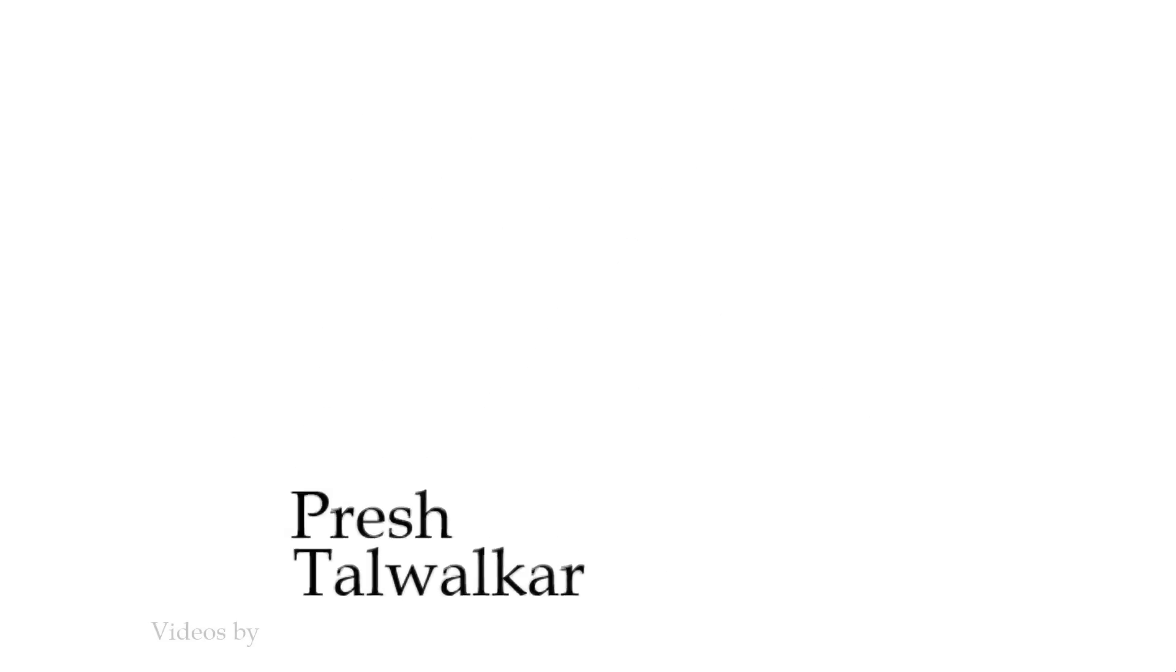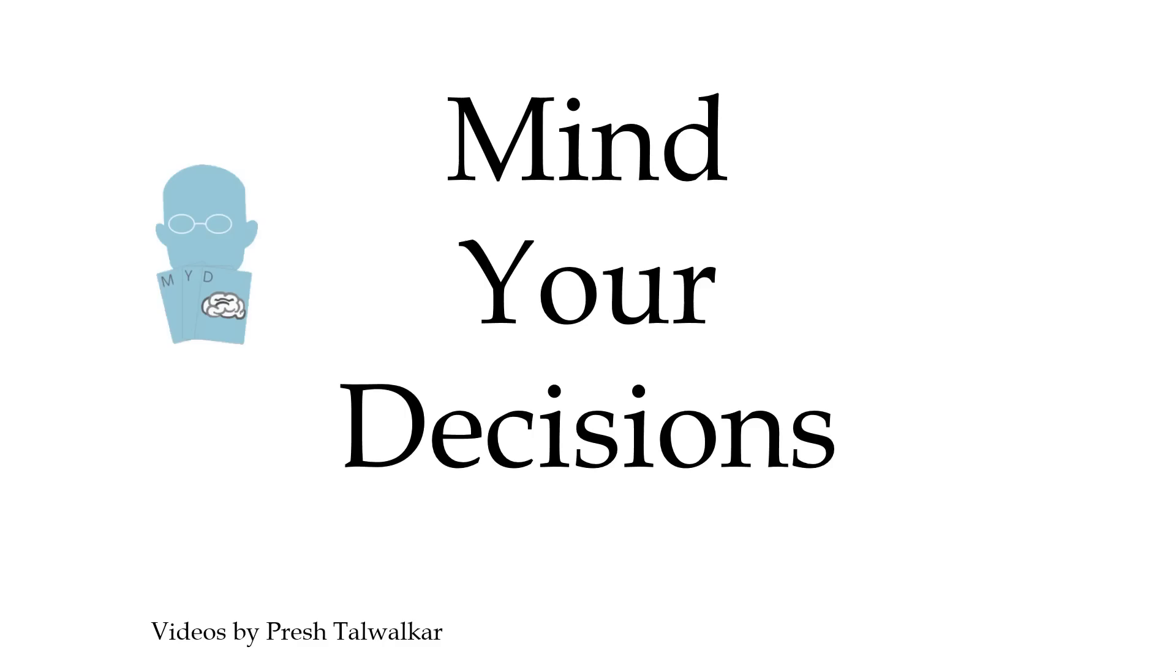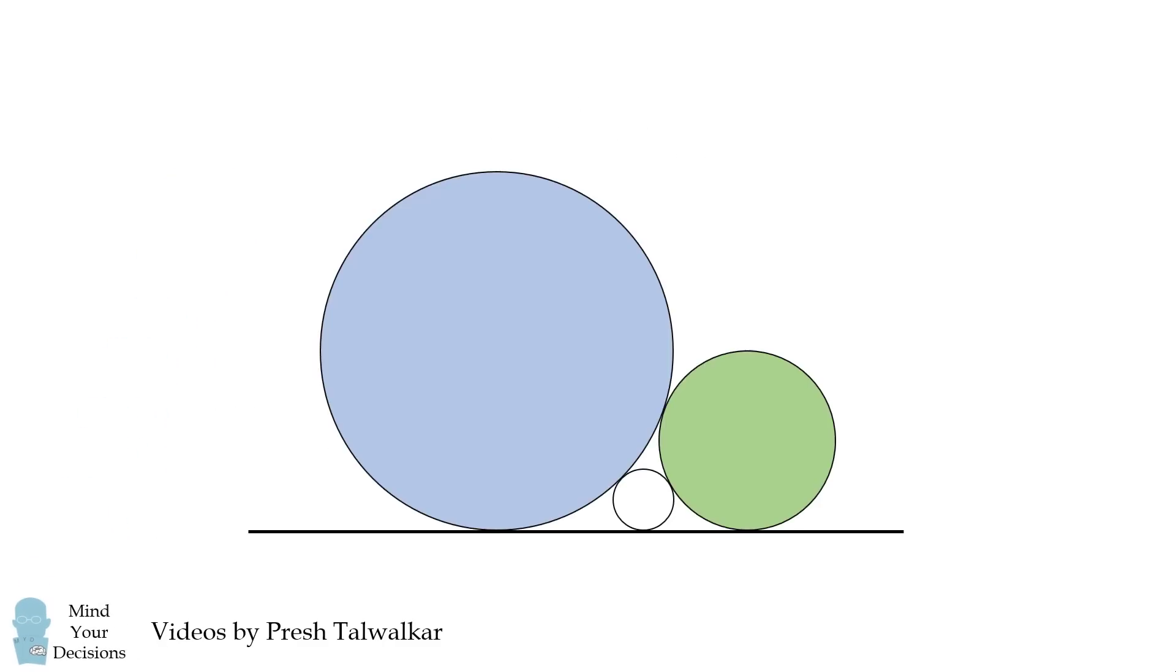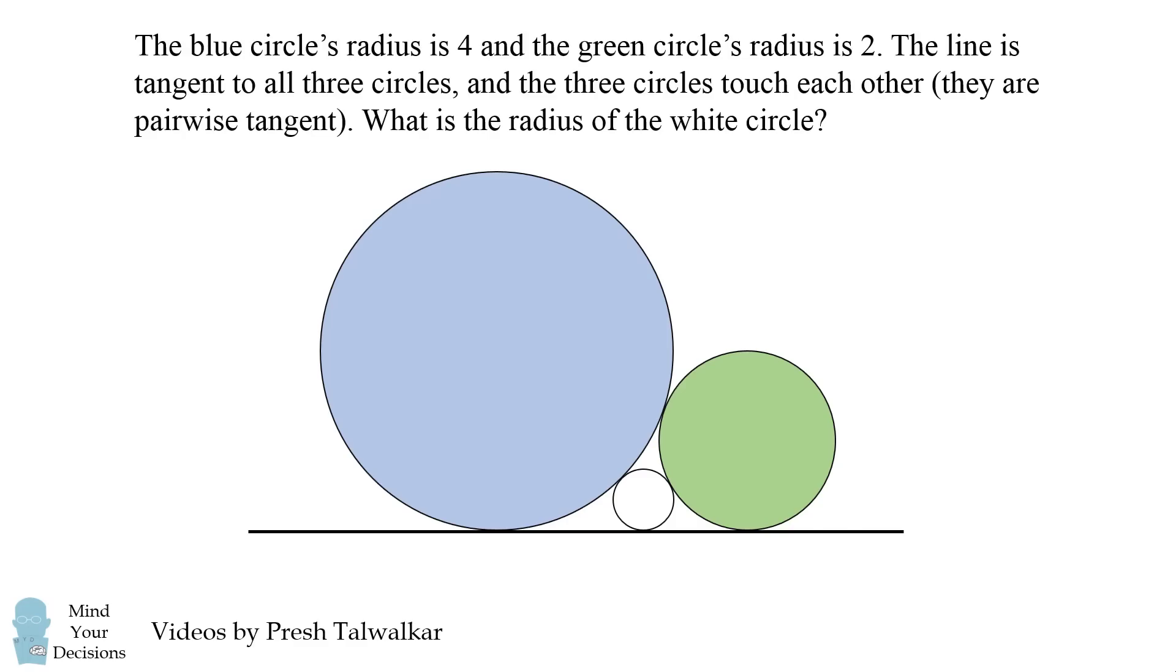Hey, this is Presh Talwalkar, and you're watching Mind Your Decisions. Consider the following diagram. The blue circle's radius is 4, and the green circle's radius is 2. The line is tangent to all three circles, and the three circles touch each other. They are pairwise tangent. What is the radius of the white circle?